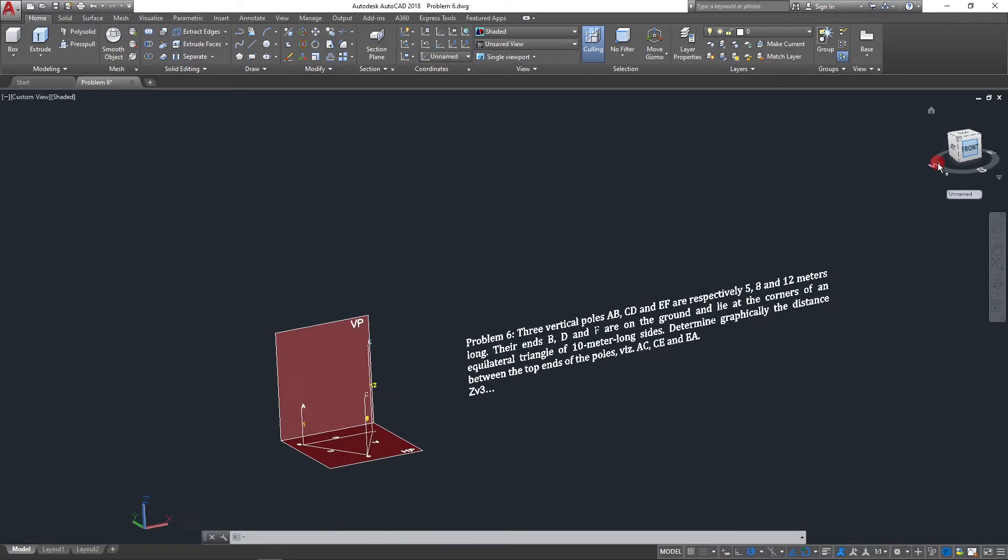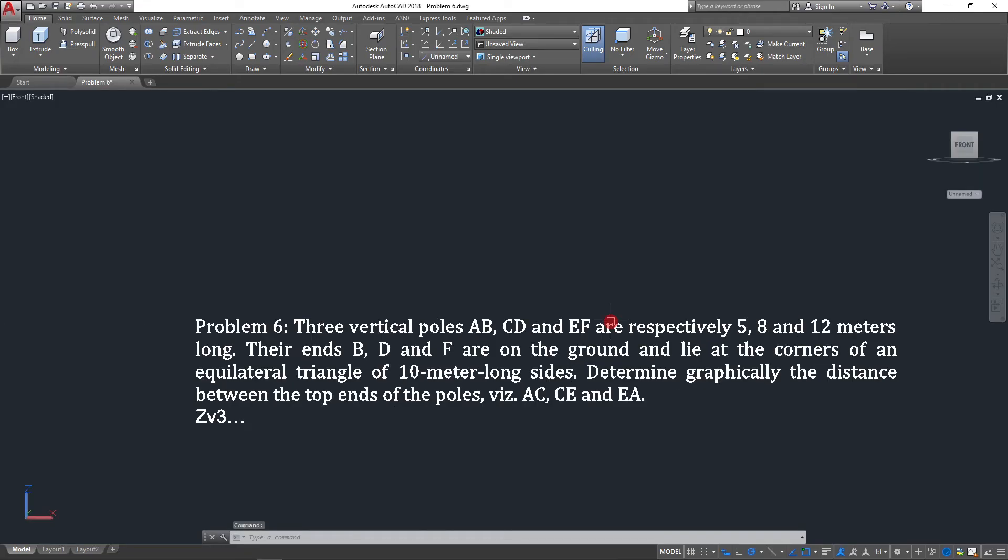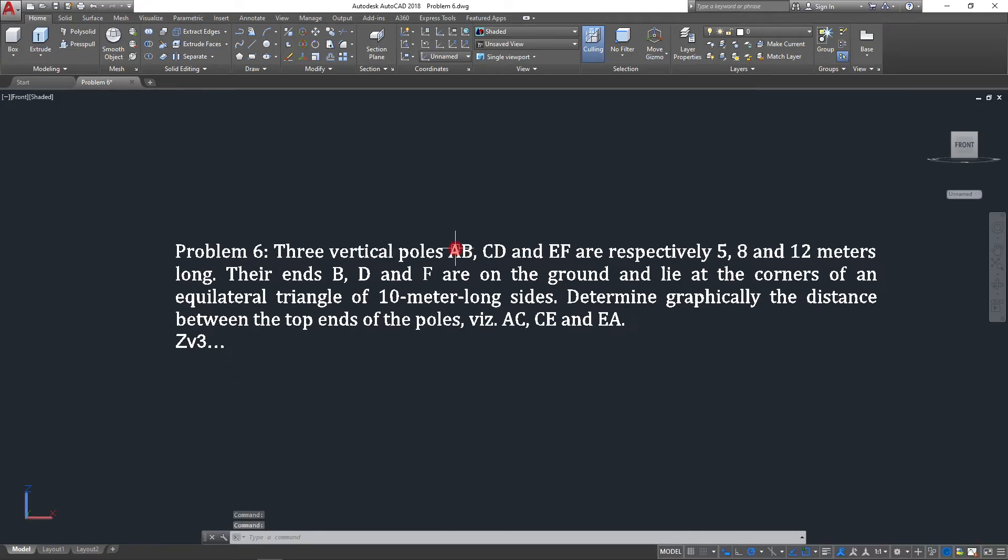It will take around five to six minutes, so be patient. Here we go. Let me read the problem. There are three vertical poles AB, CD, and EF. Length of AB is 5, similarly length of CD is 8, EF is 12 meters.